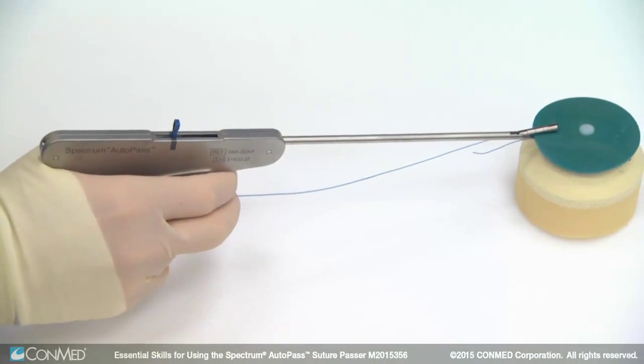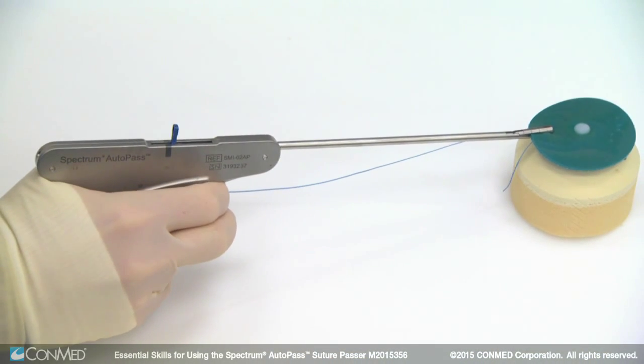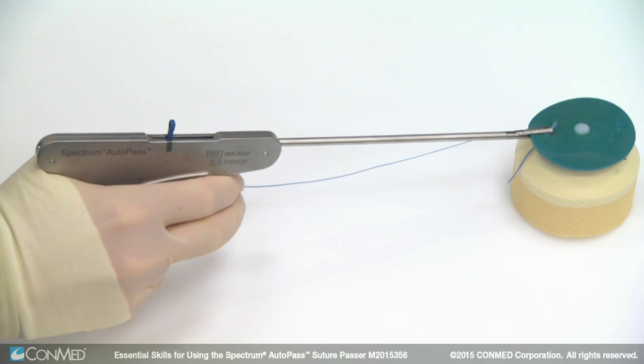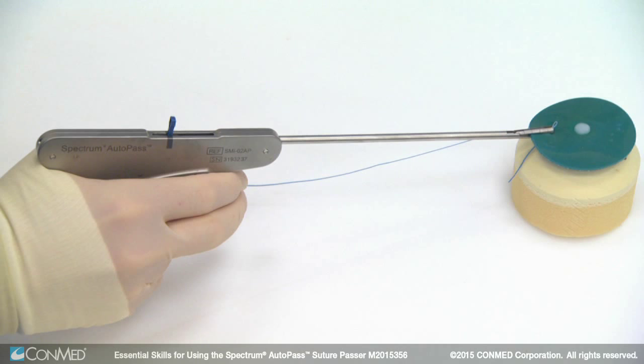Once the jaw is firmly closed, squeeze the needle trigger to deploy the needle. Keep the jaw closed, then immediately release the needle trigger and watch the trapdoor capture the suture.